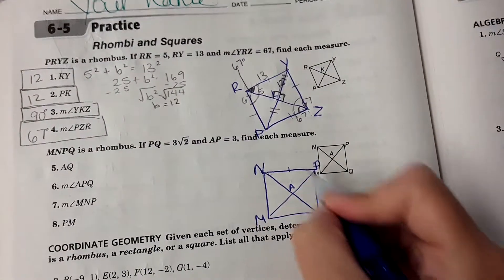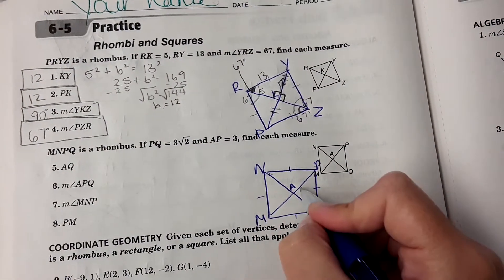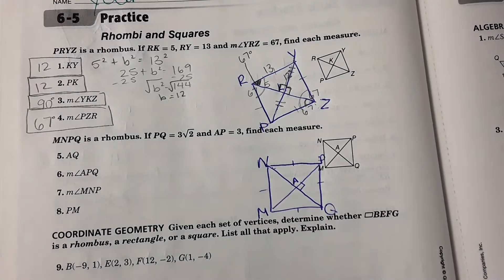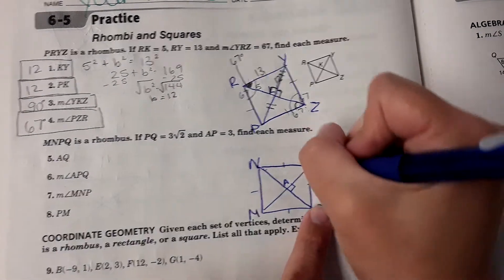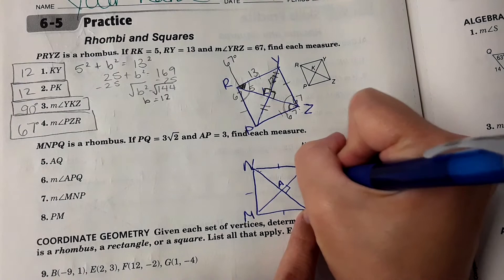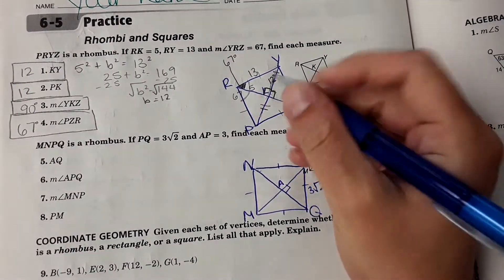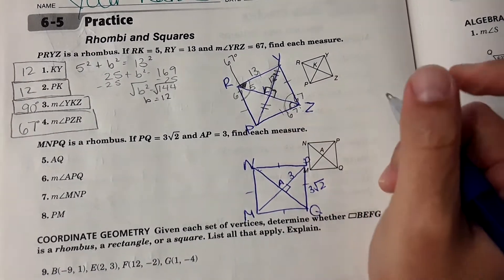So it tells us it's a rhombus. That means all the sides are the same measure. It means that this is perpendicular here. And then it says that PQ is 3 square root of 2, and AP is 3, and that's all they tell you.